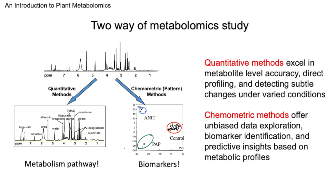Metabolomics, a field at the intersection of biology, chemistry, and data science, employs a variety of methodologies to study the complex chemical processes within living organisms. Two prominent approaches in metabolomics are quantitative methods and chemometric methods, each offering distinct advantages in unraveling the intricacies of the plant metabolome. Quantitative methods excel in metabolite level accuracy, direct profiling, and detecting subtle changes under varied conditions, while chemometric methods offer unbiased data exploration, biomarker identification, and predictive insights based on metabolic profiles. Together, they form vital tools in understanding complex metabolic systems.